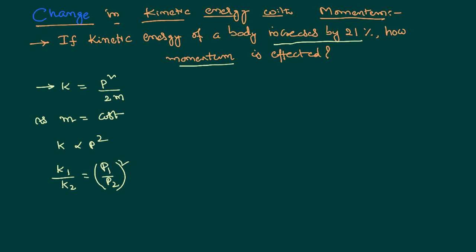Now kinetic energy is increased by 21%. Therefore if you assume k1 as k, k2 is k1 plus 21% of the k1 because it is given in the problem that it is increased by 21%.